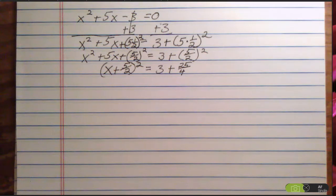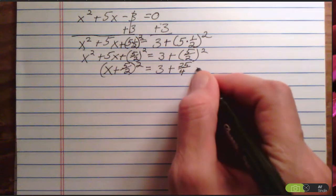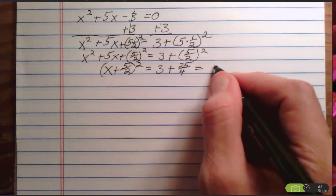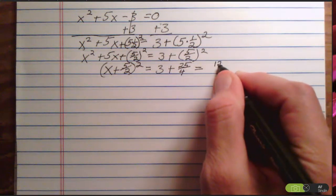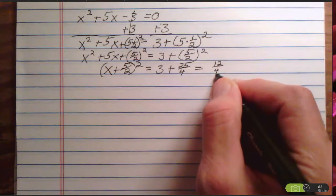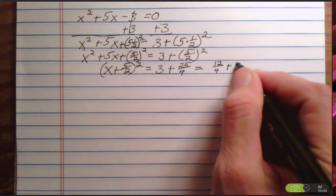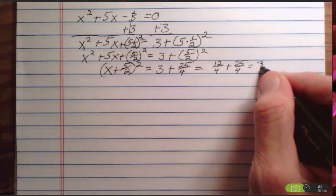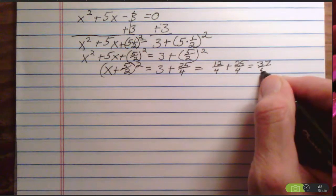You can put that in your calculator and use math frac to get a fraction equivalent. I'm going to do this the old-fashioned way by hand. 3 is the same as 12/4, plus 25/4 will be 37/4.